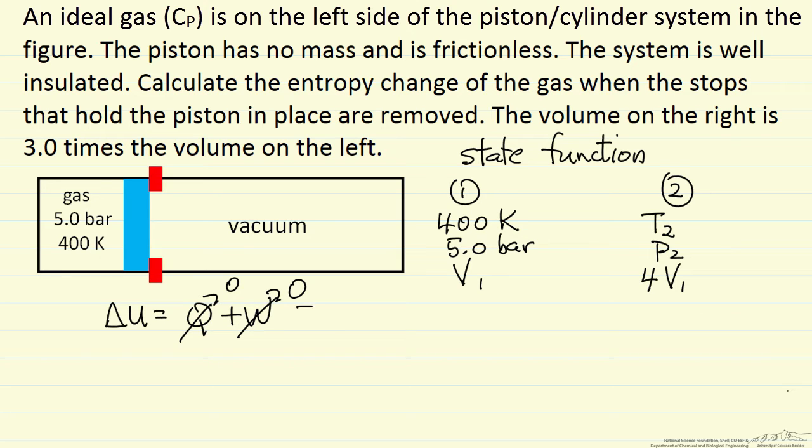Now because this is an ideal gas, we know that delta U is Cv delta T, and that is true for any process for an ideal gas. That is zero, which means delta T is zero, so T2 is 400 K.